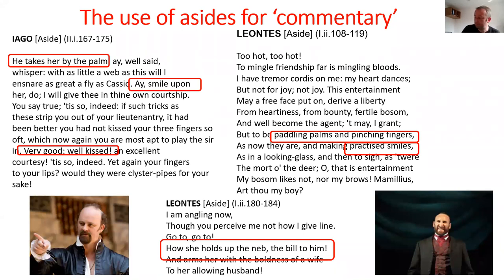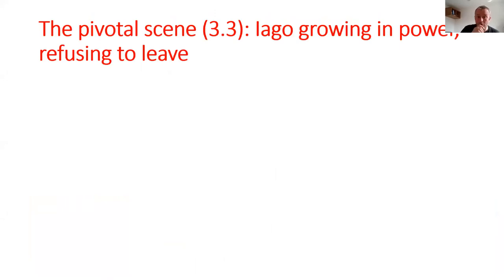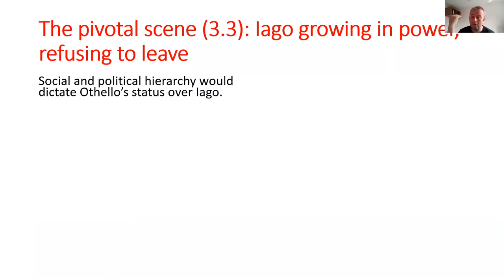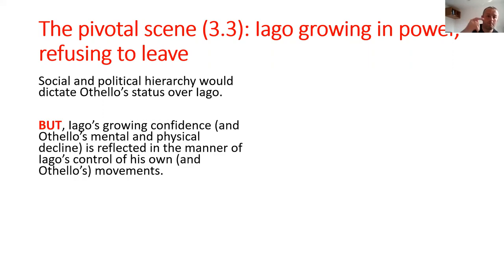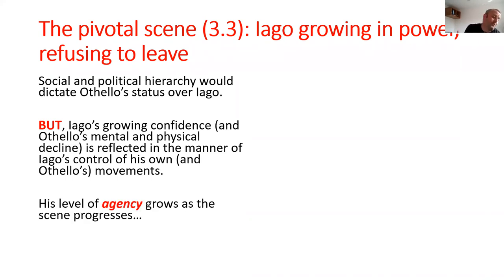Act 3 Scene 3 is the pivotal scene when it comes to staging. Iago, as we know, didn't get the lieutenancy — Cassio got the left-hand role. Social and political hierarchies dictate Othello outranks Iago, but Act 3 Scene 3 is the ultimate example where Iago grows in confidence and Othello's comparative mental and physical decline is reflected in the way Iago is able to control his own — and by proxy Othello's — movements. In A01 terms, Iago's level of agency grows as the scene progresses.